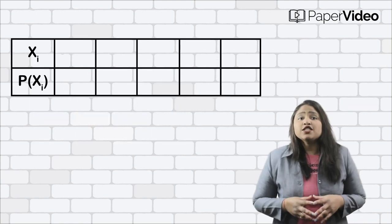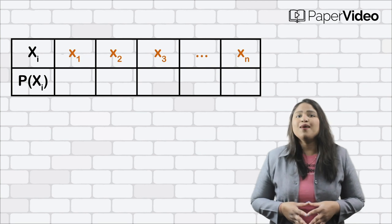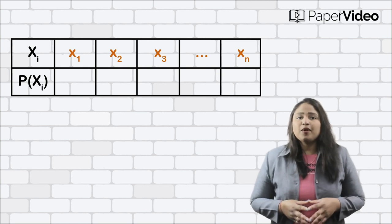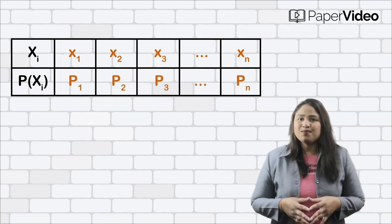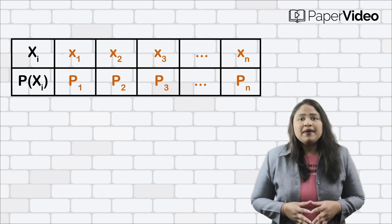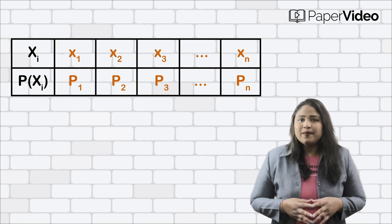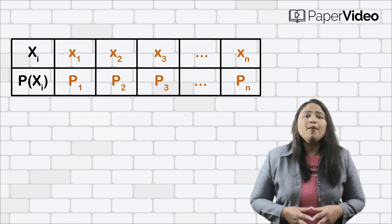If a random variable X takes value x1, x2 up to xn with respective probabilities p1, p2 up to pn, then the probability distribution of the random variable X is represented in the form of this table.